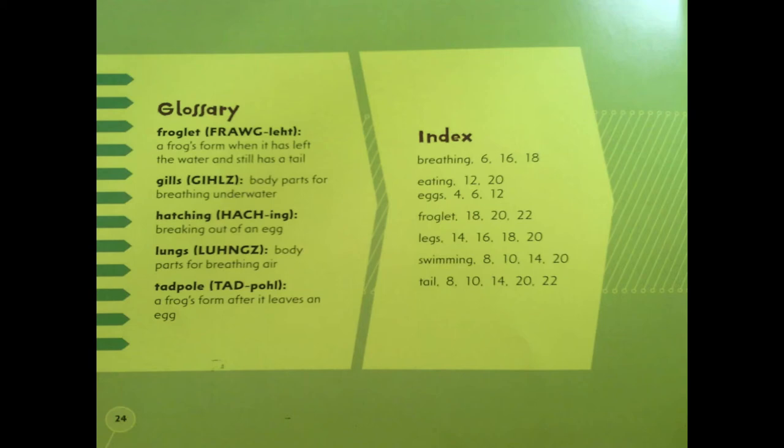The last text feature we find is on the right — it's called the index. Here's another place we can look for specific page numbers that will take us to information on smaller topics within our topic. For example, if we wanted to know about how a frog breathes, we can look at pages 6, 16, or 18. We can also look up things like eating, eggs, froglet, legs, swimming, and tail. And there are all the page numbers where we can find that information listed in the index.